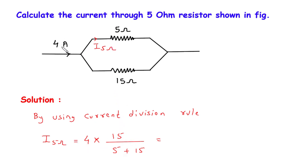First we have to take the total current — here it is 4 ampere — then multiply it with the opposite branch resistance. Since we have to find the 5 ohm branch current, we take 15 ohm in the numerator and divide by the addition of both, that is 5 plus 15. This is the formula for the current division rule.